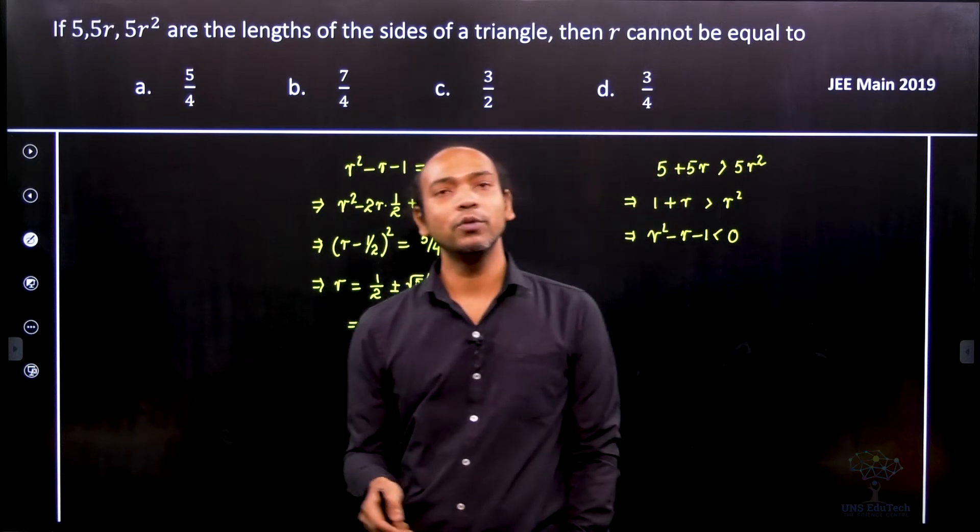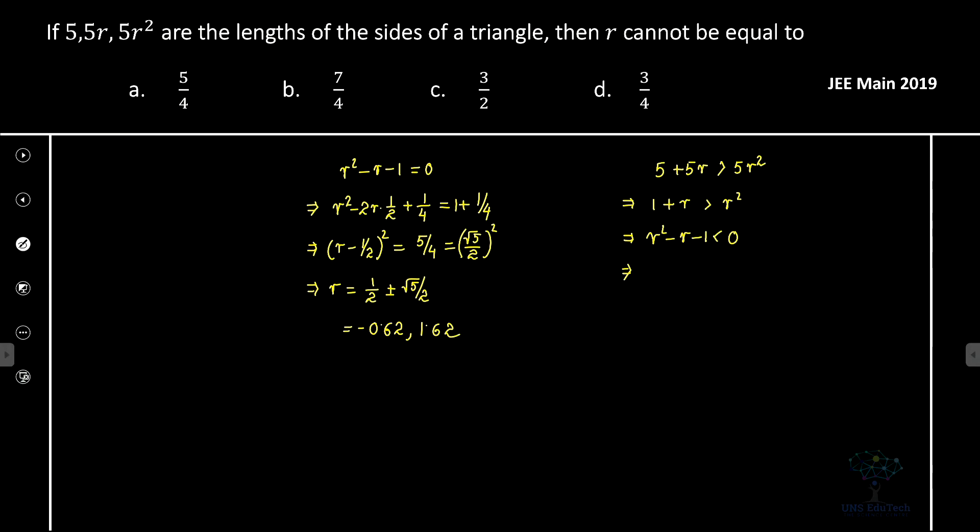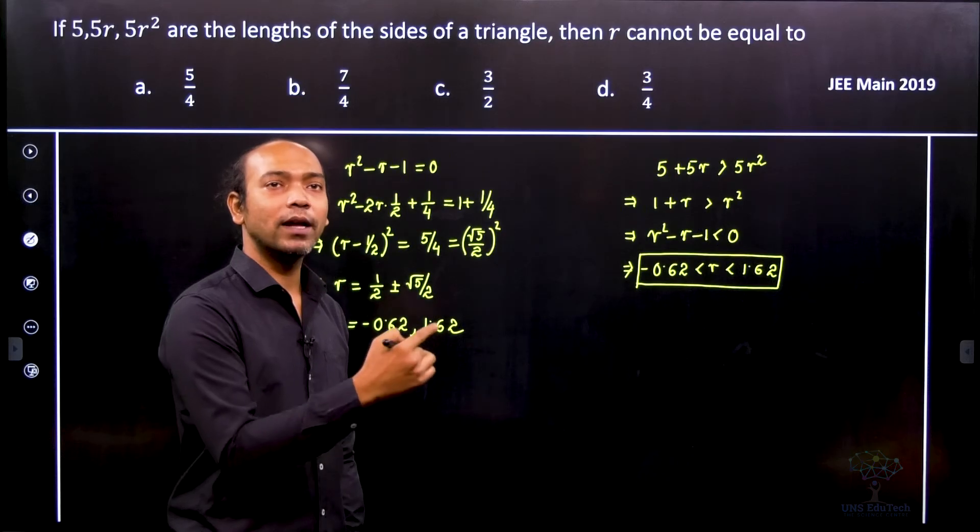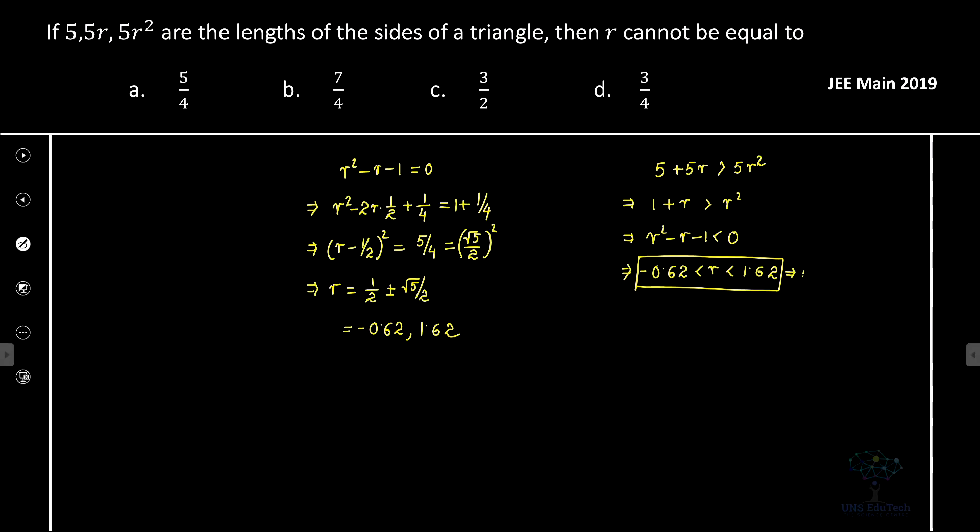If you don't want to do the numerical calculation, it's okay, no problem. So therefore it implies that r is between -0.62 < r < 1.62. So if r is in this interval, then only 5, 5r, and 5r² represent the triangle. Therefore, if r lies inside this interval, then the lengths of the sides represent a triangle.